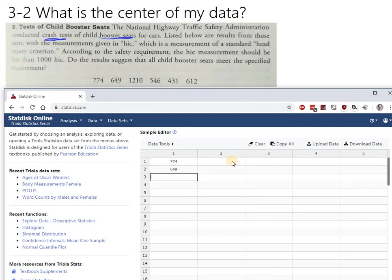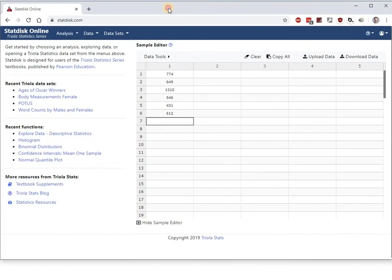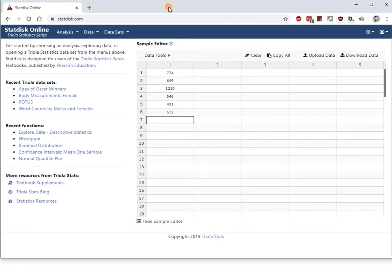774, 649, 1210, 546, 431, and 612. Okay so now we've got those typed in. Let me just pull this up so we can focus on it. And so we have our data.